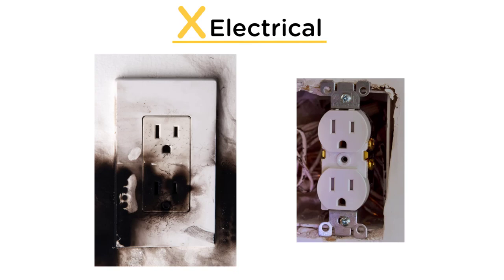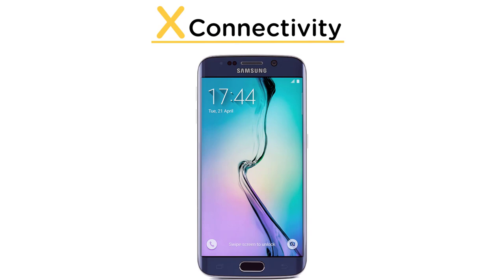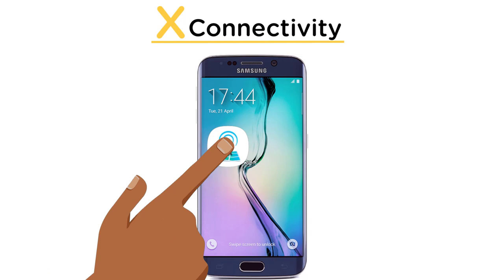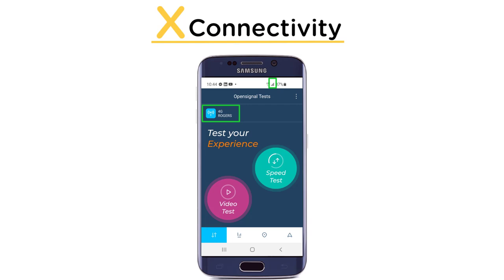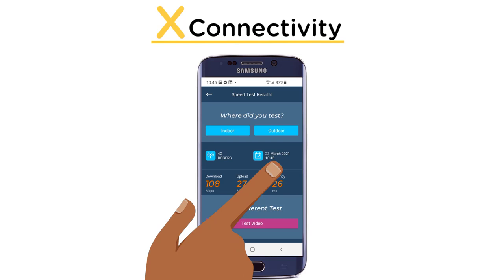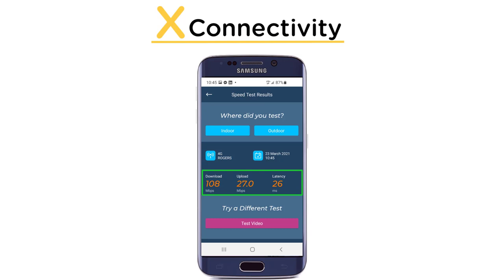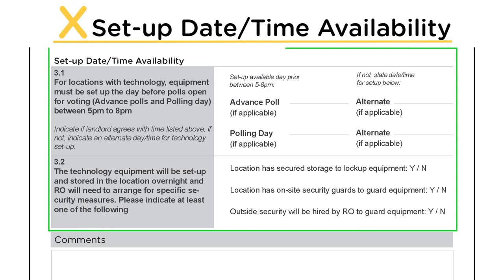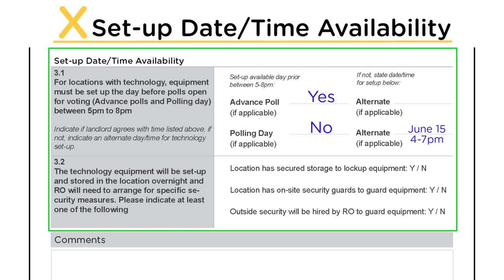Section 2 is Connectivity. Check the signal strength using the OpenSignal application installed on the provided smartphone. Record the signal type and signal strength in the voting room. If the signal strength is two bars or fewer, walk around the room to find the wall with the strongest signal strength, then run the speed test. Record the download speed, upload speed, and latency (a.k.a. ping) on the inspection checklist. Setup date and time availability: voting locations with technology require poll officials to enter the premises the day before polls open to set up and test the equipment. This takes approximately three hours from 5 pm to 8 pm. Confirm with the landlord that the voting room is available at this time, or if they require an alternate time or date, and indicate this in the setup date and time availability section of checklist F02-55. The rental agreements will indicate the compensation the landlord receives for this extra day. The equipment needs to be securely locked up overnight, and the RO must arrange specific security measures.